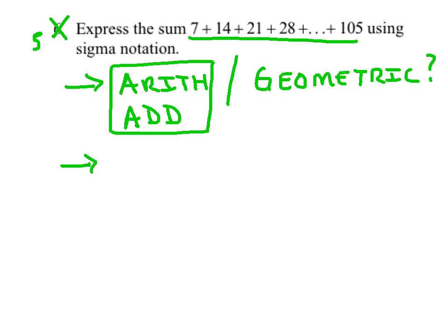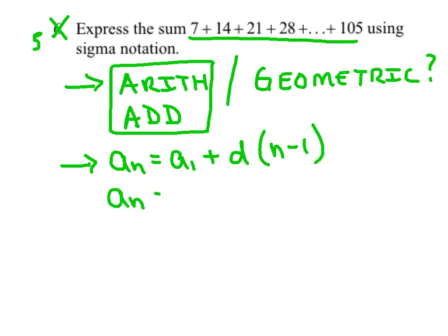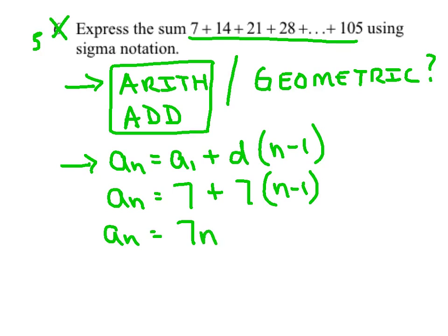The next step is to write the rule for the nth term. Generally speaking, the nth term is the first term plus the common difference times the quantity n minus one. The first term is seven and the common difference is also seven, since that's what we're adding to each term. After distributing and combining like terms, the nth term simplifies to 7n.